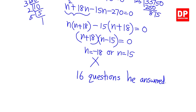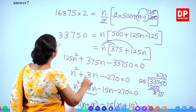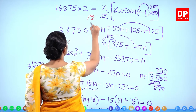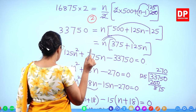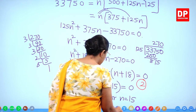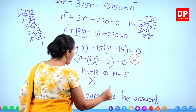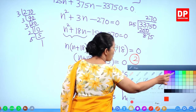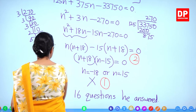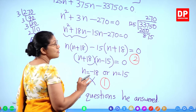You get 2 marks for writing the equation, 2 marks for solving, and 1 mark for the final answer 16. Altogether 5 marks for this part. With 2 and 3 marks previously, the total is 10 marks for question 7.